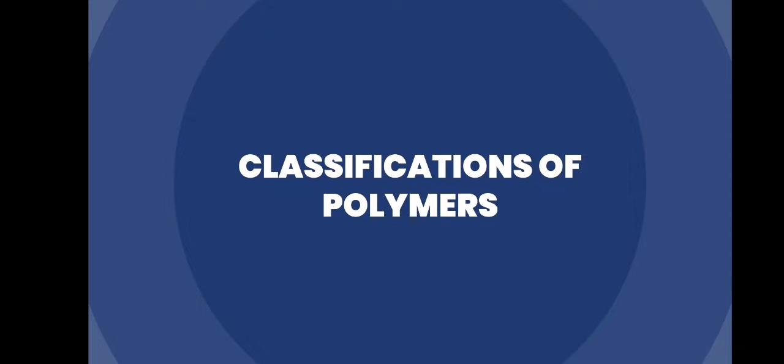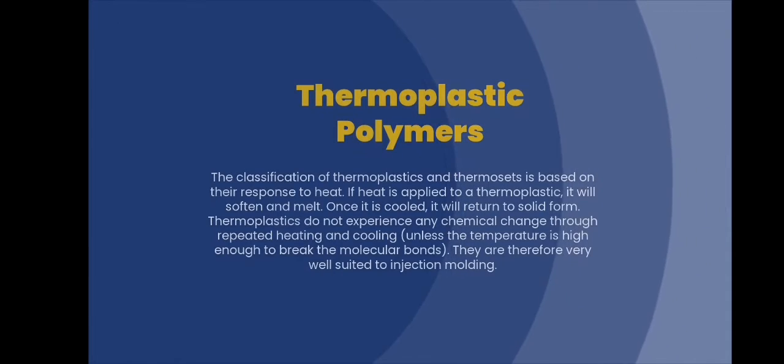Classifications of polymers. Thermoplastic polymers. The classification of thermoplastics and thermosets is based on their response to heat. If heat is applied to a thermoplastic, it will soften and melt. Once it is cooled, it will return to solid form. Thermoplastics do not experience any chemical change through repeated heating and cooling, unless the temperature is high enough to break the molecular bonds. They are therefore very well suited to injection molding.